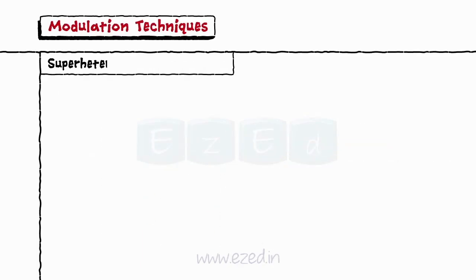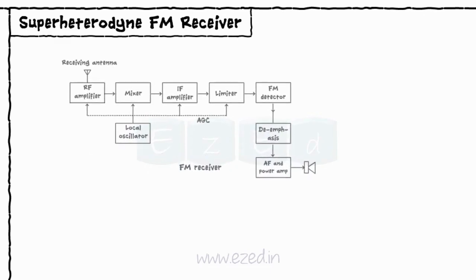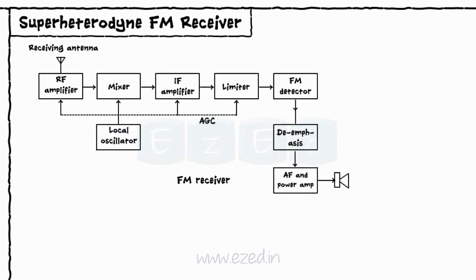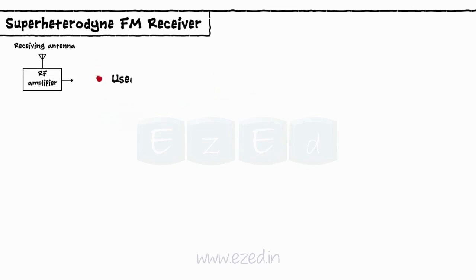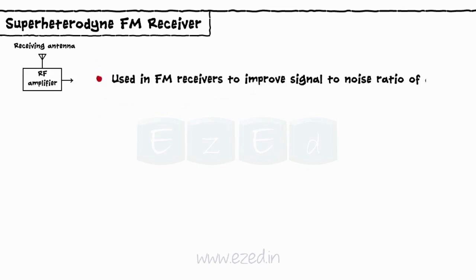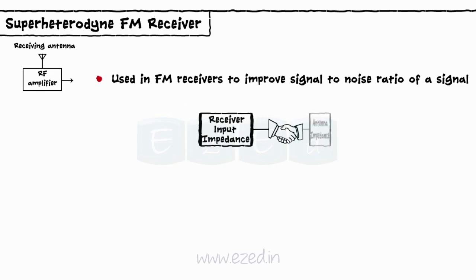We will now see the super-heterodyne FM receiver. The block diagram of the FM receiver is as shown. The RF amplifier is used in FM receivers to improve the signal-to-noise ratio. It also matches the receiver input impedance with the antenna impedance, which is required for good reception of a signal.